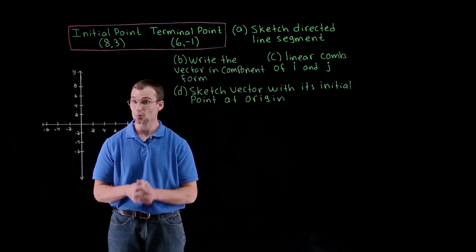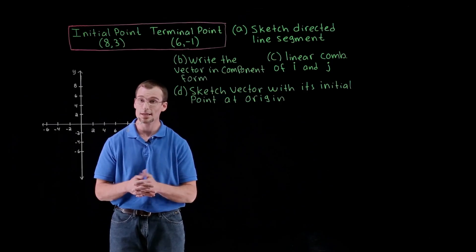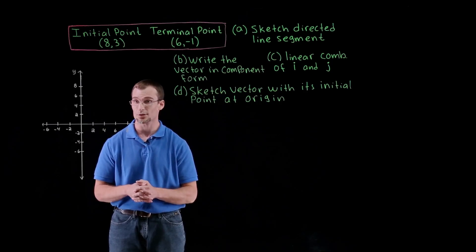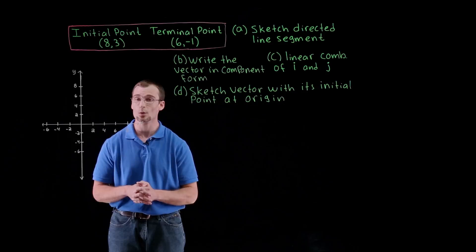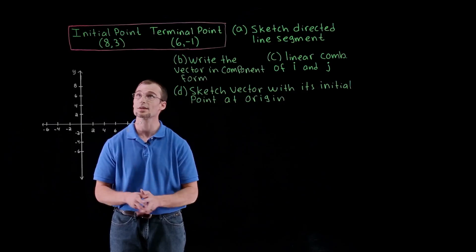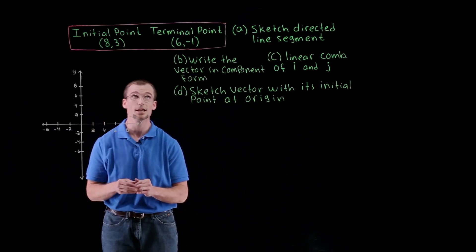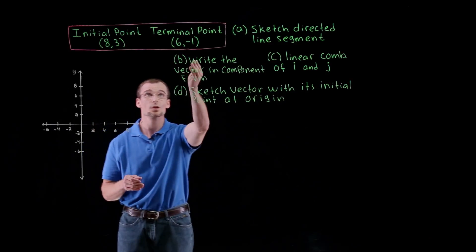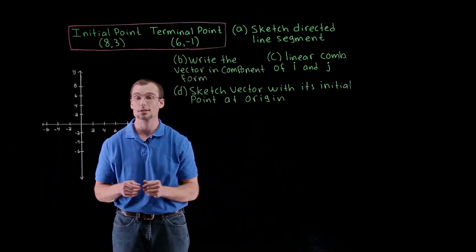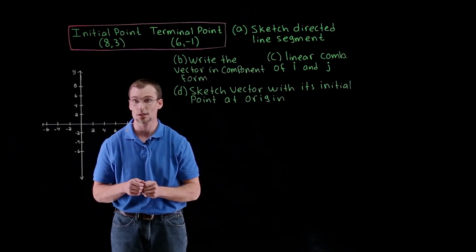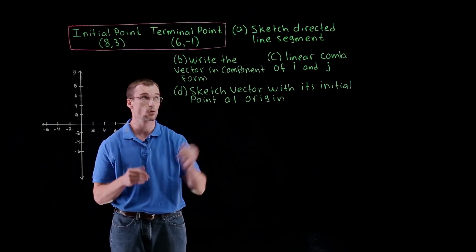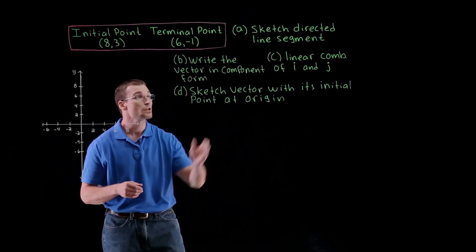Hello, everyone. I'm Adam. In this problem, we're going to be getting an introduction to vectors. Namely, what we're going to be doing is starting with an initial point at coordinates (8, 3) and some terminal point at coordinates (6, -1), and answering these four questions.